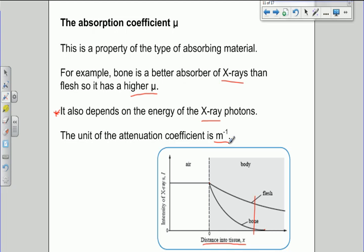Now, the unit of the attenuation coefficient is per metre. Just metres to the minus one.